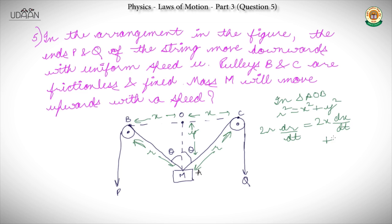We have been asked that mass M will move upwards with what speed, which basically means we need to find dy/dt. So let's differentiate this to get dy/dt. In this case, we will see that the X exchange is not happening.